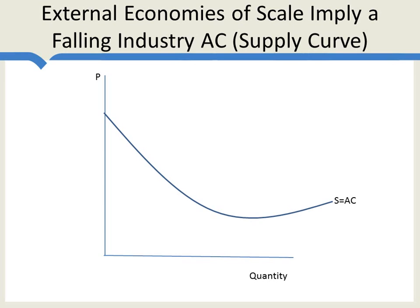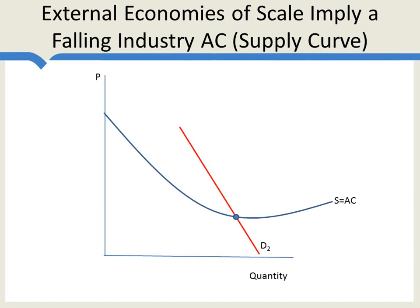External economies of scale imply that as the industry gets larger, the costs of each firm in that industry begin to fall. And this means that the supply curve for the industry can actually be downward sloping, at least over part of its range. So the supply or industry average cost curve, in contrast to the usual supply curve which is upward sloping, can actually slope downwards, particularly as the cluster is being established. So when Dalton, Georgia is small, the carpet industry has high costs. But as the industry in Dalton grows larger, the costs to each firm in that industry begin to fall. Notice that what this means is that when an industry is large, it's going to be very difficult to start an industry anywhere else, because the costs of production are lowest in Dalton, Georgia, where economies of scale have already been built up.